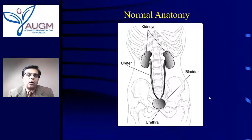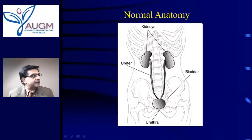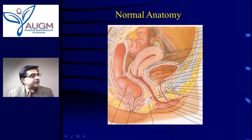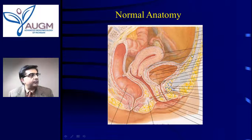Let us understand the normal anatomy of the female urinary tract system. As you can see here, these are the two kidneys. The kidneys filter the blood and produce urine. This urine is then transported by two tubes called the ureters into the bladder. This is the side view of the bladder of a woman standing up — this is the front, this is the back, this is the top, and this is the bottom.